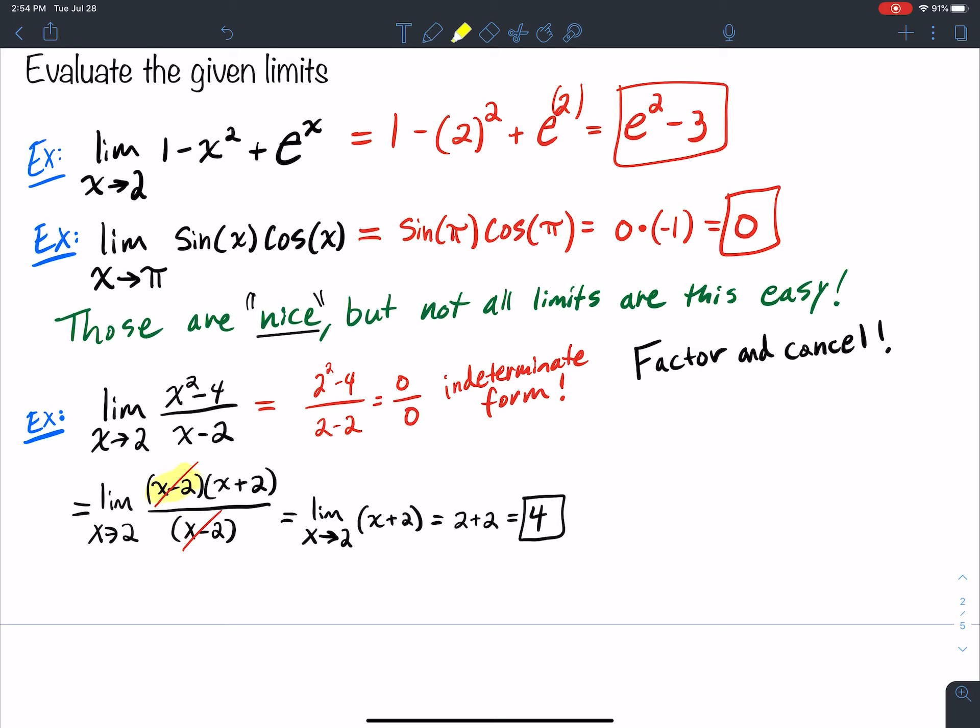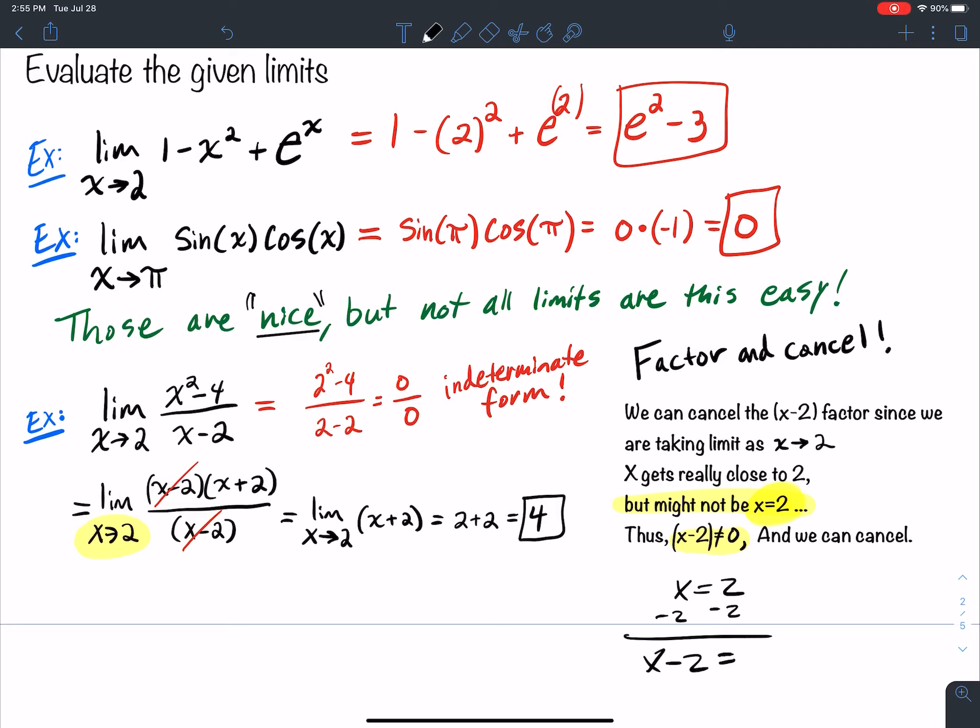So what allows us to cancel these factors here? What property allows us to cancel these and not have to worry? Well, it's the fact that we are taking the limit as x approaches 2. So that means that x gets really close to 2, but it might not be equal exactly to 2. So when we get into the precise definition of a limit, we say it's an open interval around 2 in a neighborhood of 2, but with the possible exception of being exactly equal to 2 itself. And if x is not exactly equal to 2 itself, then that means x minus 2 is not equal to 0. How do I know that to be the case? If you think about it, guys, x equal to 2, if I'm minus 2 from both sides, this is x minus 2 equal to 0. So that's where we're getting that from.